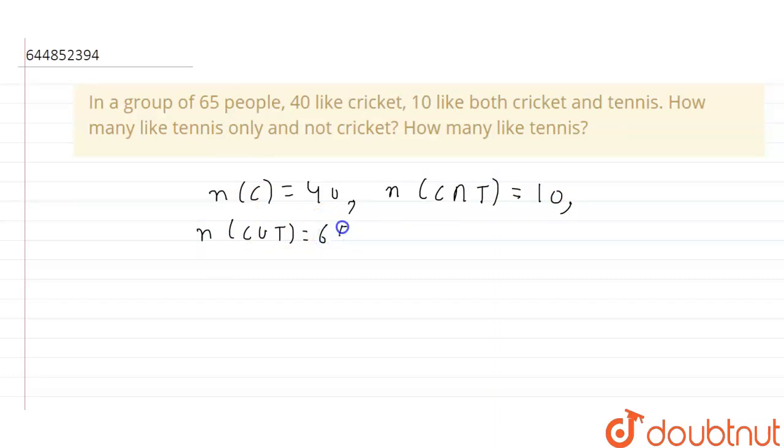So we have to find out how many like tennis only and not cricket. So number of people who like tennis only will be the number of people minus the number of people who like cricket.